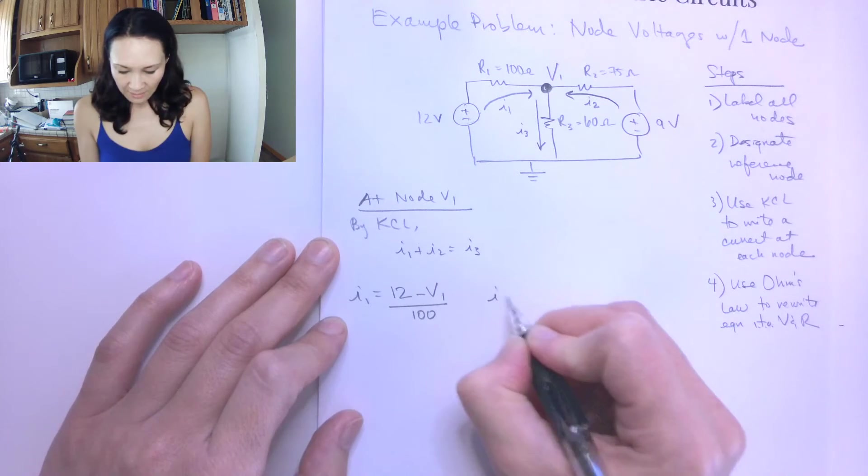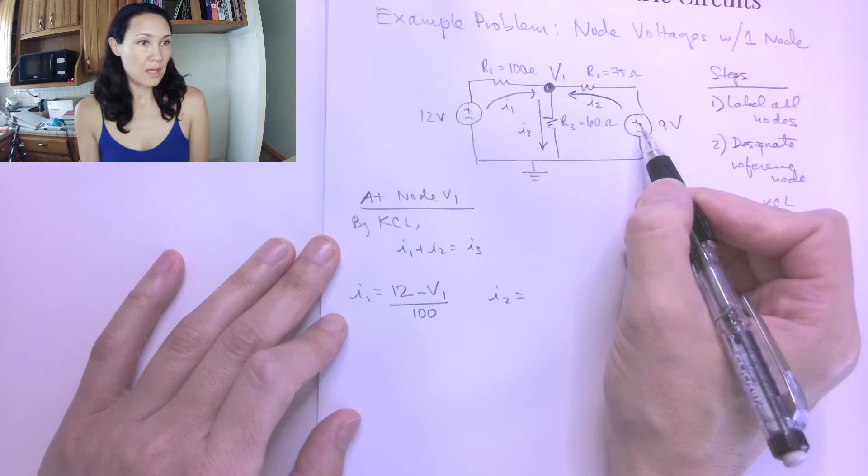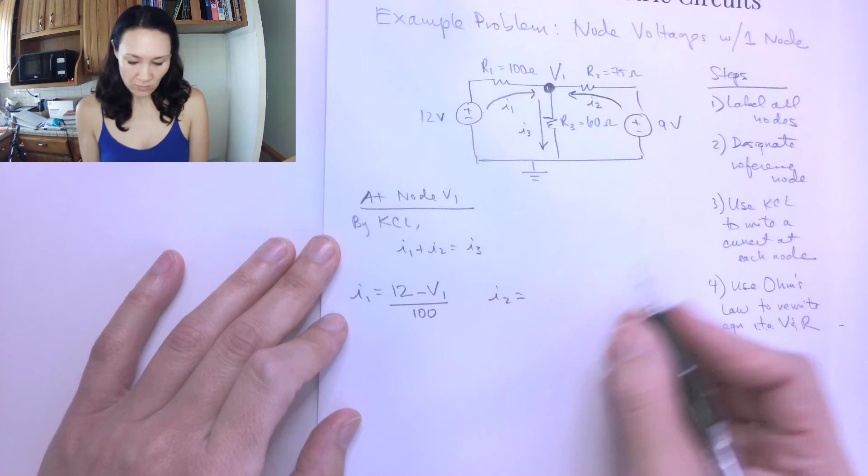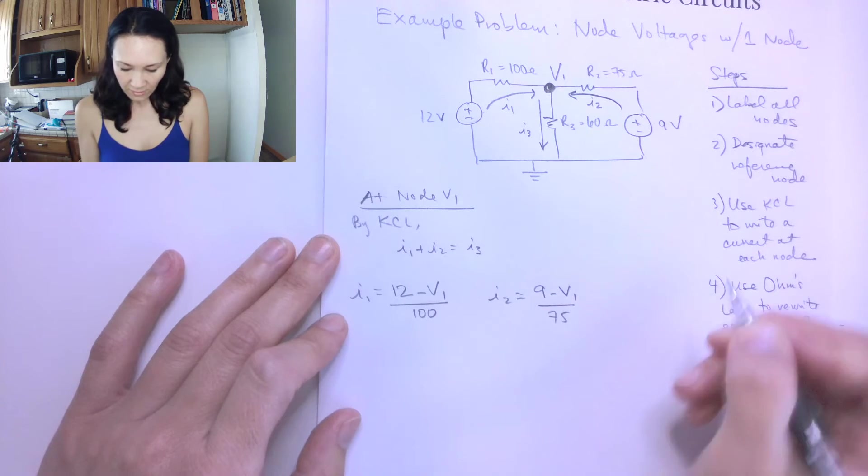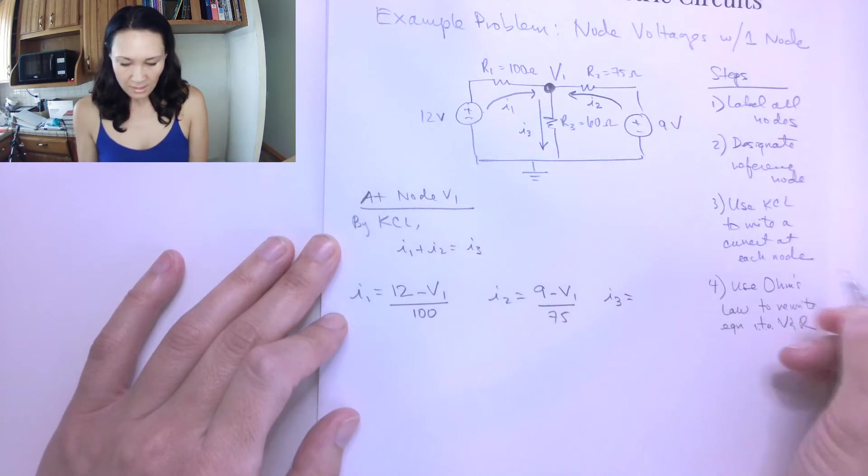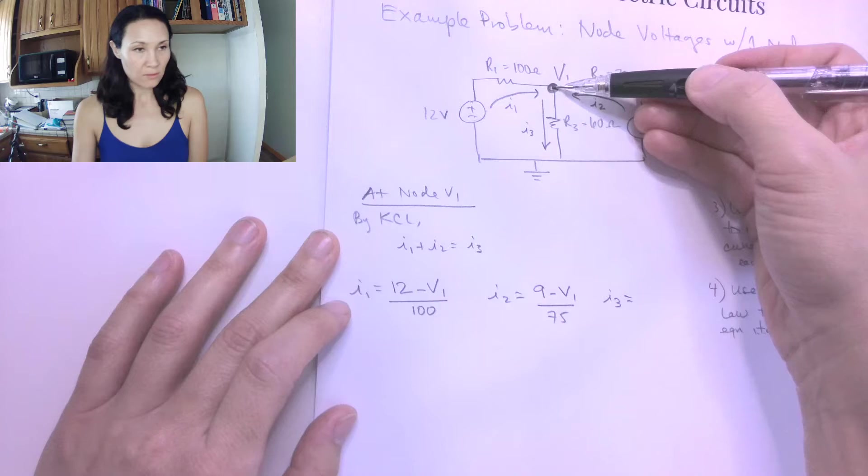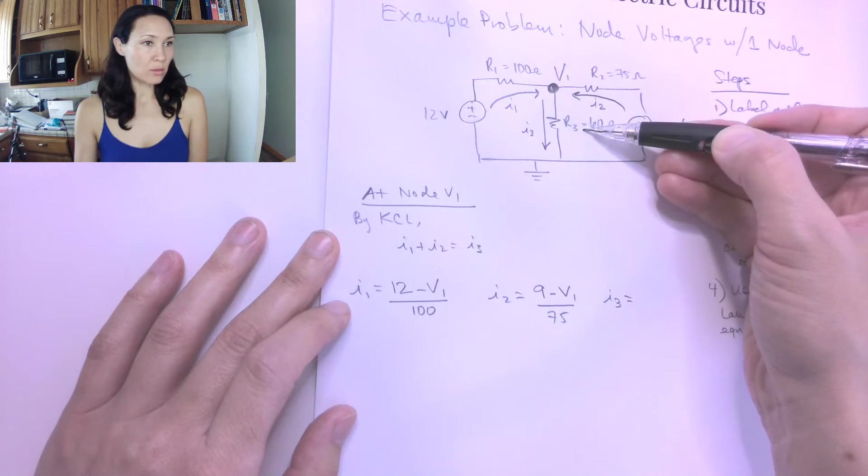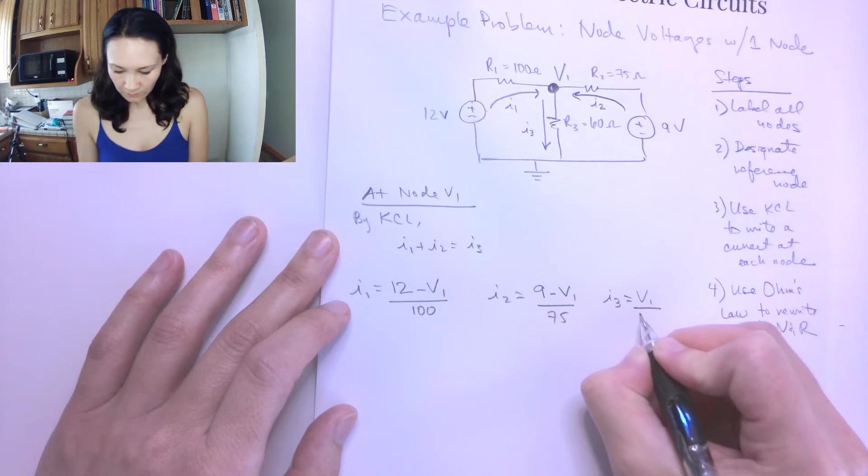Next, I have that I2 is going to start over here. So this is going to be 9 minus V1 divided by the resistor between, which is 75. And then for I3, since my direction of my current is going this way, I'm going to start at this node, V1 minus 0 divided by the resistor between, which is 60. So V1 over 60.